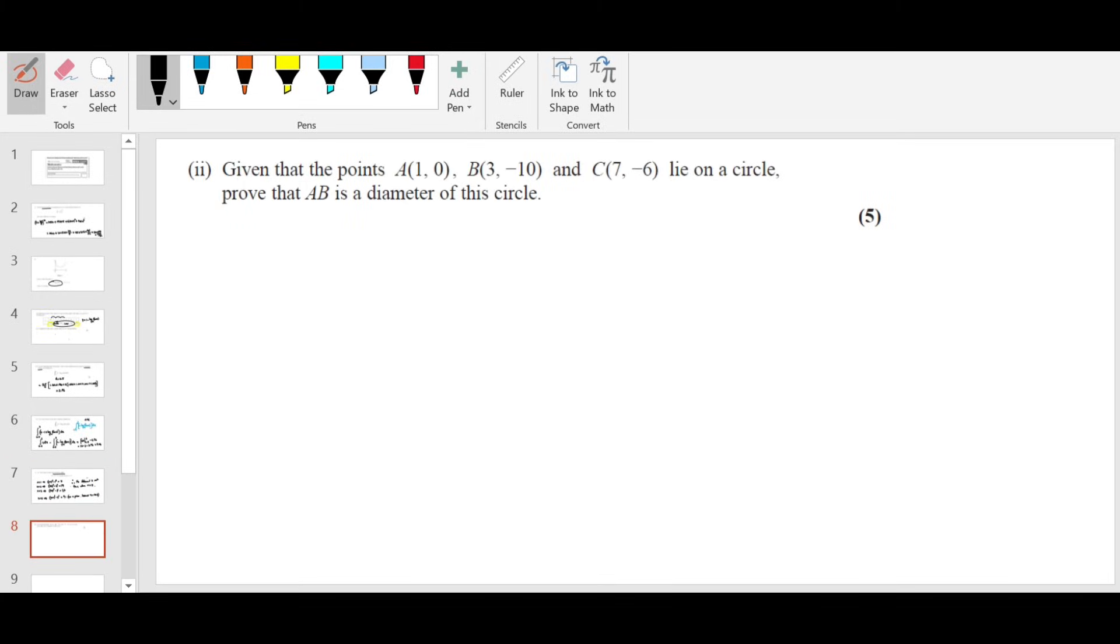Question number 3, part ii now. Given that the points A, B, C lie on a circle, prove that AB is a diameter. If you take a circle, let's say AB is a diameter, C you can take anywhere. We have learned this in circle theorem. If you complete this triangle, it's going to be a right-angled triangle. That's the concept we are going to use here. So if we find the slope of AC, slope of BC, one should be negative reciprocal of another one because they both are perpendicular lines.